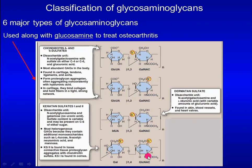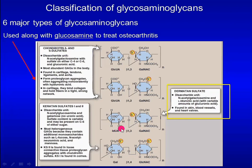Keratan sulfate also uses glucosamine instead of galactosamine. Among these, dermatan sulfate is clinically important because of two structural features. First, it uses iduronic acid as the acidic sugar. Second, iduronic acid is often sulfated at the C2 position.